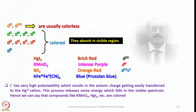Looking at d1, d4, d6, and d9, they have some similarities: d1 has one electron, d4 is one less than half-filled, d6 is one more than half-filled, and d9 is one less than completely filled. Similarly, d2, d3, d7, and d8 have similarities, and d5 is unique. These configurations show very similar spectra when subjected to UV-visible absorption.